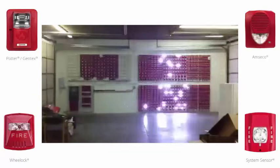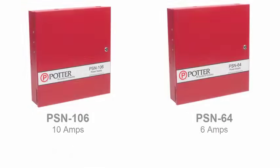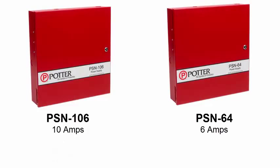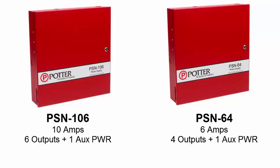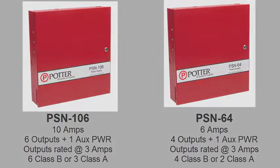By the end of this video, all those strobes will be synchronized using this PSN series power supply. The PSN series notification power supply comes in two sizes, either a 10 amp or a 6 amp. The 10 amp has 6 outputs while the 6 amp has 4 outputs. Each panel also has one aux power circuit. All the outputs are each rated at 3 amps. Both panels can be wired class A if necessary.